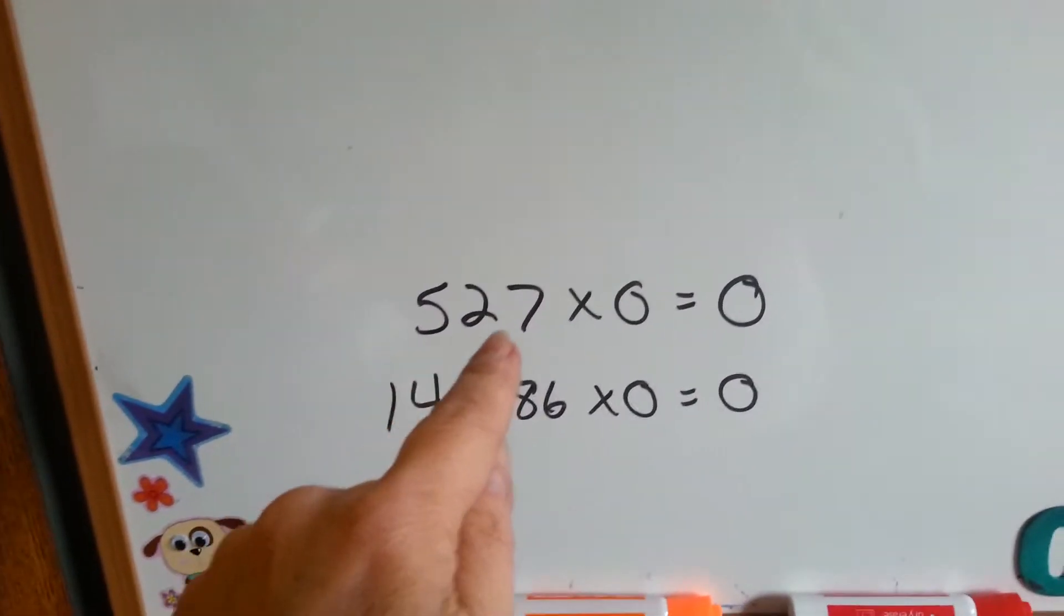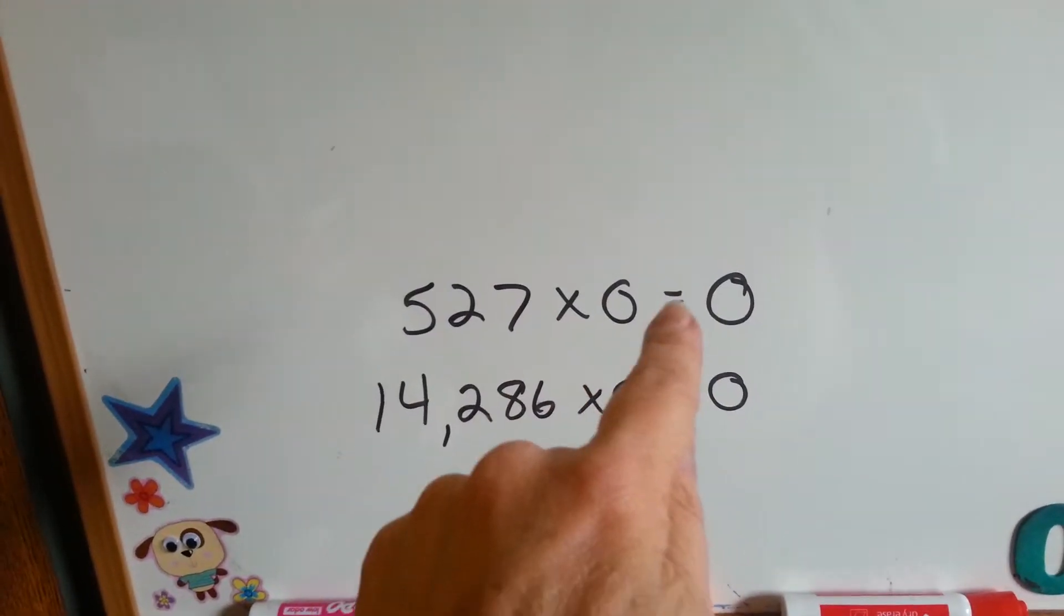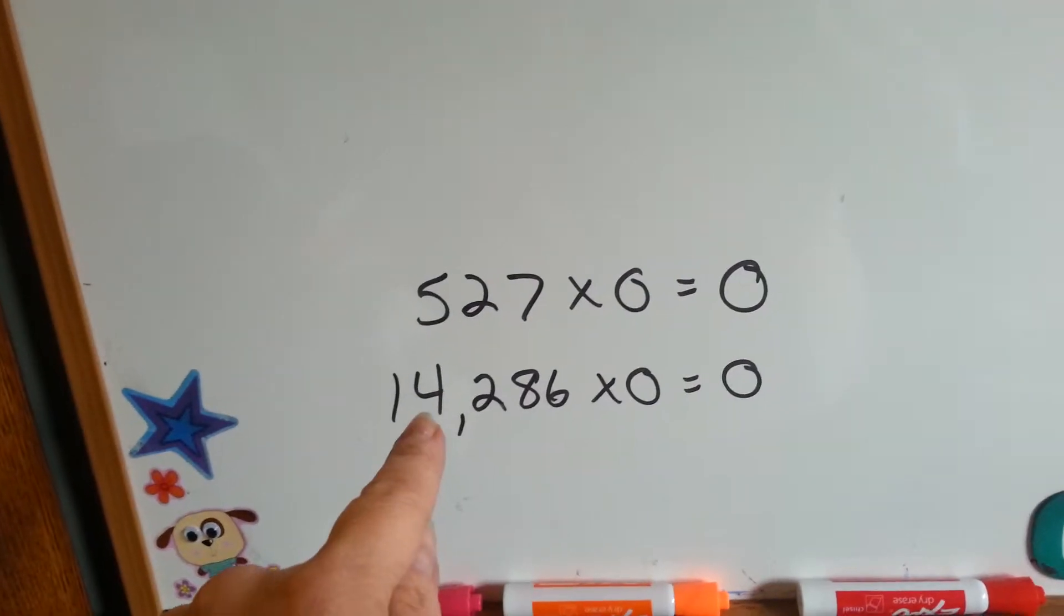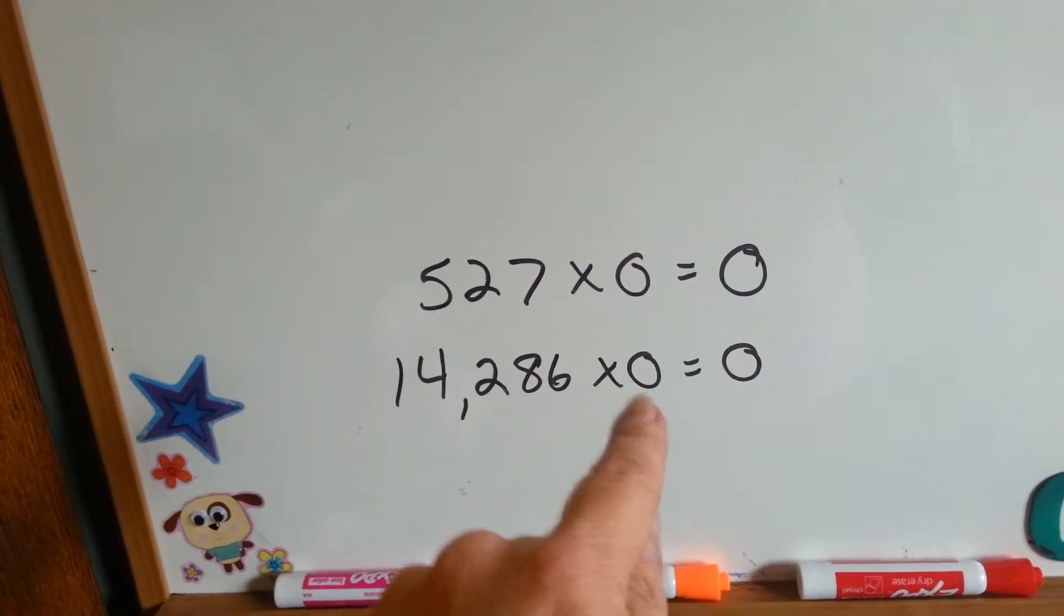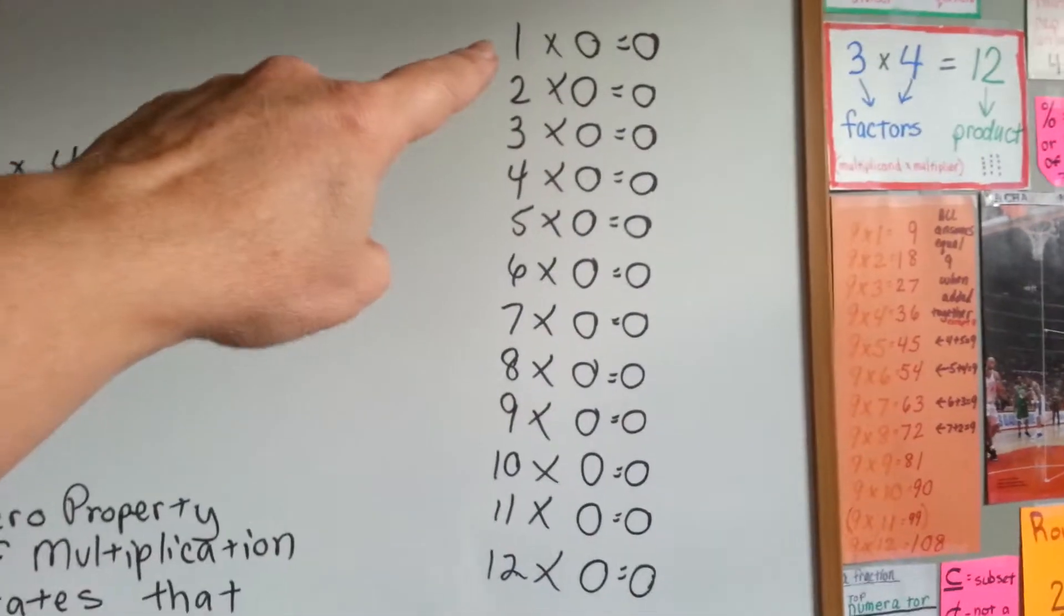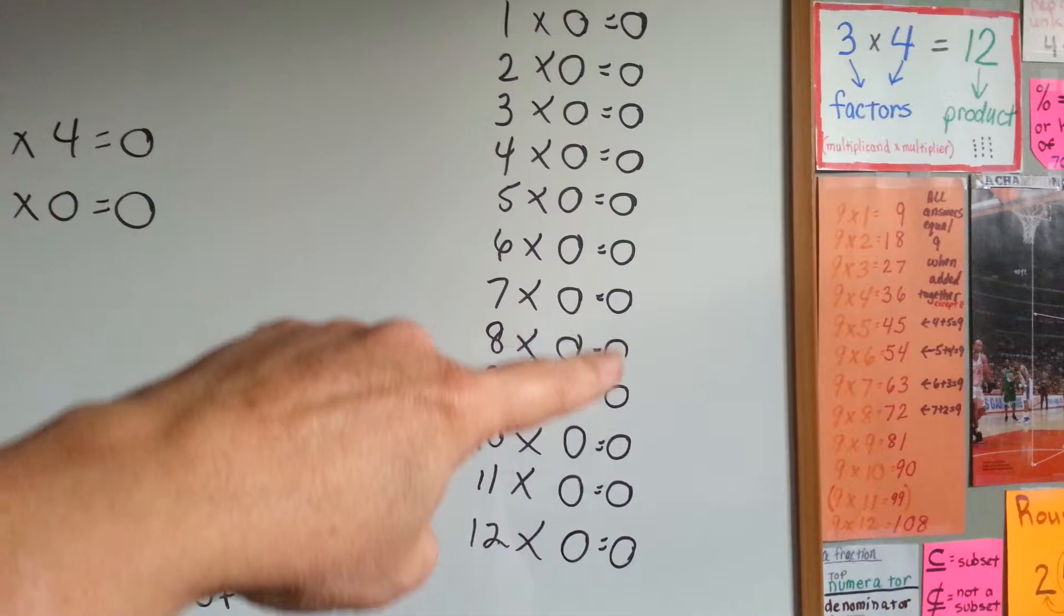Even our big numbers, 527 times 0 equals 0. 14,286 times 0 is 0. The 0 times table always equals 0.